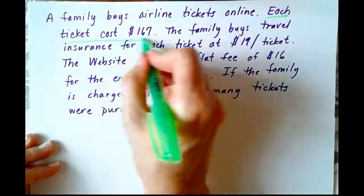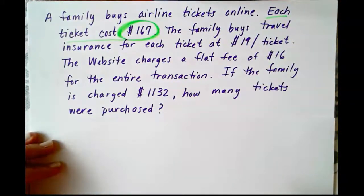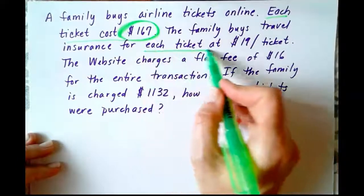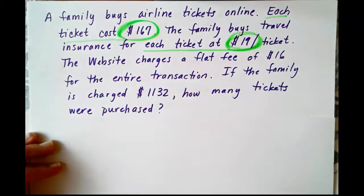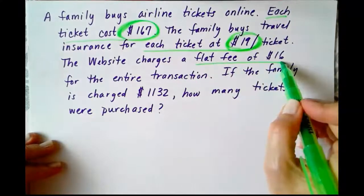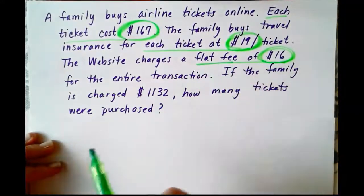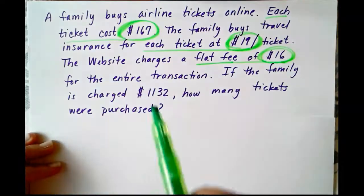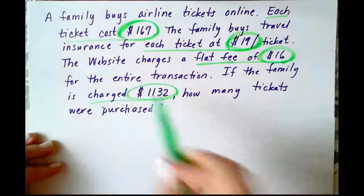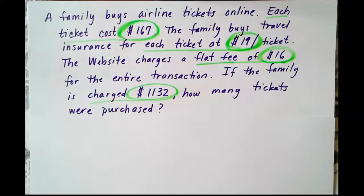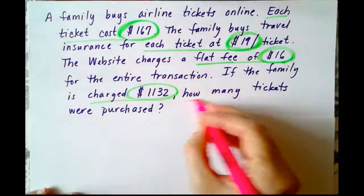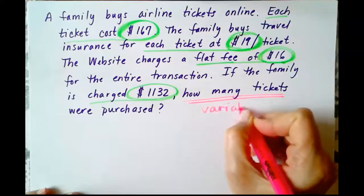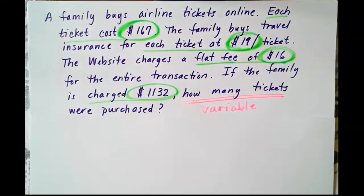So here's what we've got. We've got each ticket costs $167. The family is going to buy travel insurance for each ticket at $19 per ticket. The website charges a flat fee of $16. Now a flat fee means it's only going to get charged one time. That's it. So that's $16 for the entire transaction. And the family is charged a total of $1,132. How many tickets were purchased? How many tickets? That's our variable.